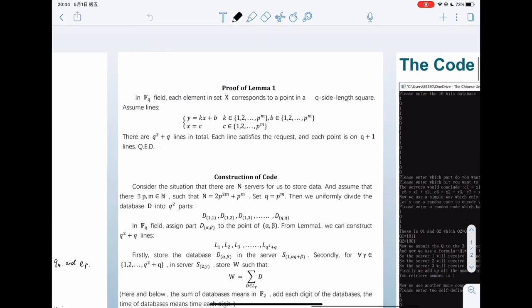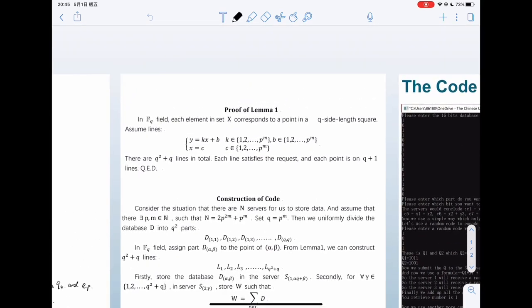To prove this lemma, in F_q field, we can draw lines that are y equals kx plus b and x equals c. Then there are q^2 plus q lines in total. And each line satisfies the request and each point is on q plus 1 lines.